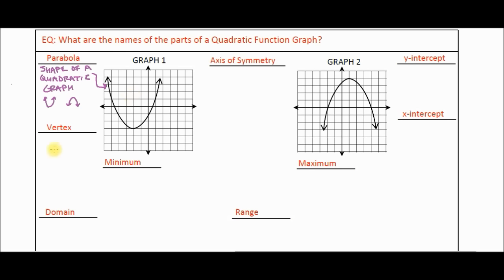Next, let's talk about vertex. The vertex is the lowest or highest point on the parabola. For a parabola opening up, the vertex is the lowest point. For a parabola opening down, it's the highest point. We'll draw an arrow to show where the vertex is on each graph.